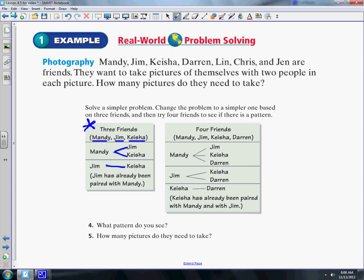Now if I have four: Mandy, Jim, Keisha, and Darren. I have Mandy with each of them, that's three pictures. Then Jim needs to be with each of the two he was left with, and then Keisha and Darren. That gives me six pictures. So three friends equals three pictures, and four friends equals six pictures.